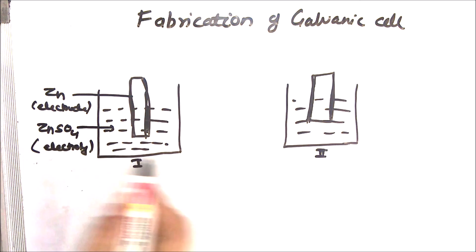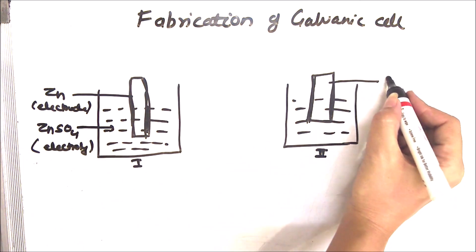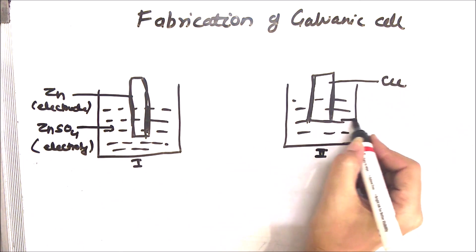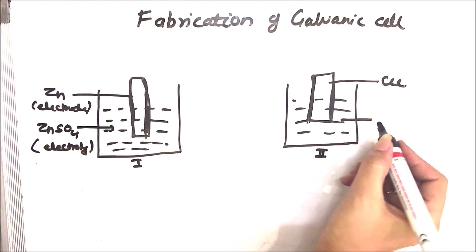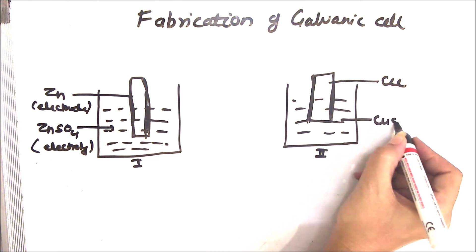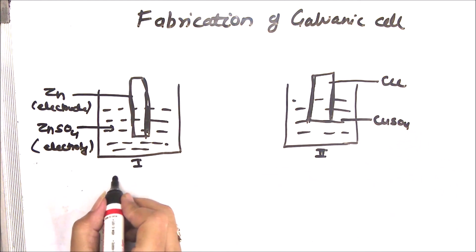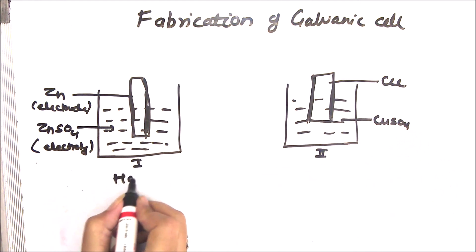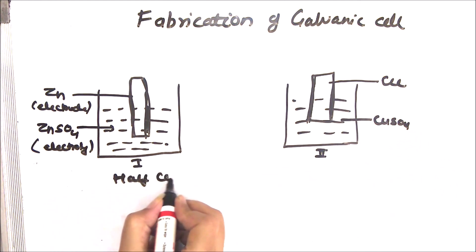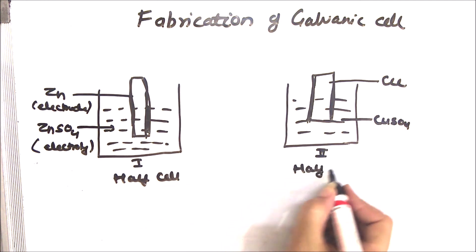Now there is another beaker which has a copper electrode, and it is dipped in the solution of its own ion, that is copper sulfate. Now students, the first one is called a half cell, and this again is called a half cell.